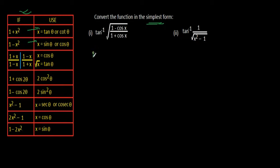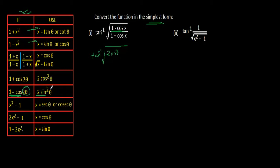Starting with this question: tan inverse square root. Here it is written 1 minus cos, so whenever you are having 1 minus cos, you are directly going to write 2 sin square. So in place of 1 minus cos, you are going to write 2 sin square. The angle is 2 theta, which has been converted to theta — meaning the angle has been halved. So if the angle is x, it will be x by 2.